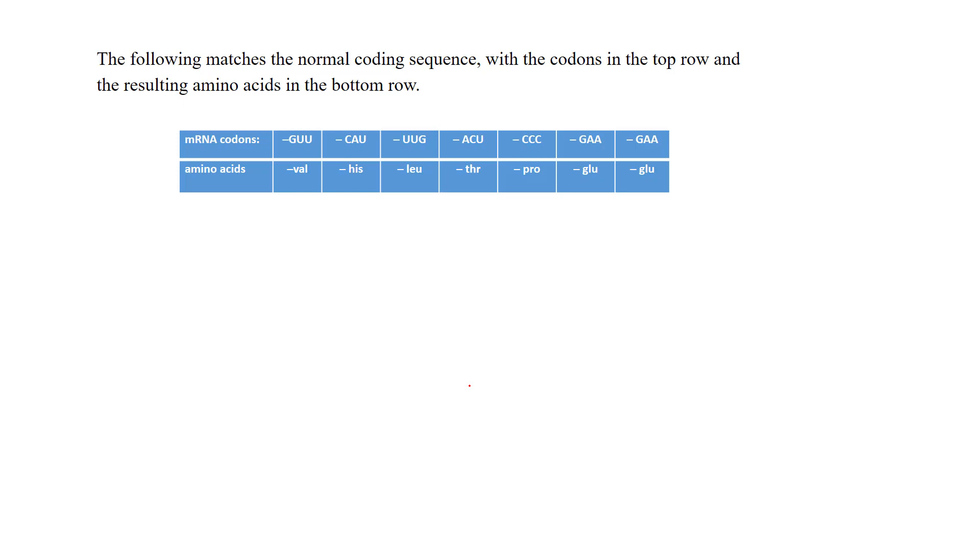It says the following matches the normal codon sequence with the codons in the top row and the resulting amino acids in the bottom row. So they're telling us here are the codons, and then the amino acids that those will actually code for.